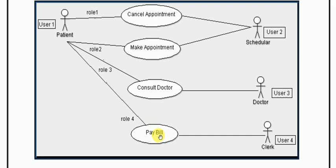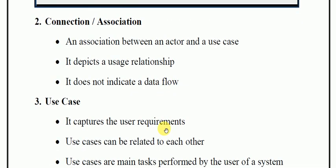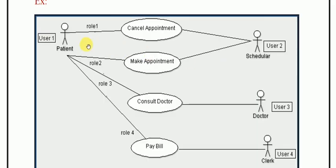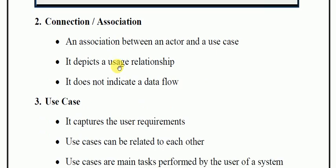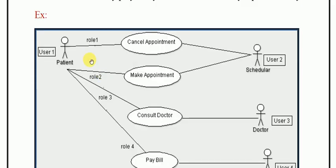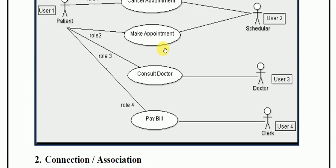You can see the connections in the diagram. What are the connections? They are associations between the actor and the use case. After defining the actors and use cases, you draw lines representing associations. It depicts the usage relationship and does not indicate data flow — it shows what the relationship is between an actor and a use case, not how data moves.